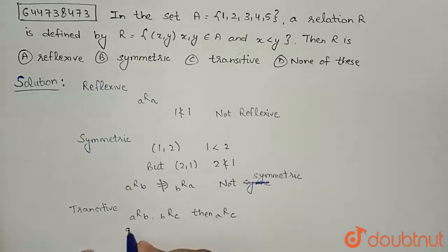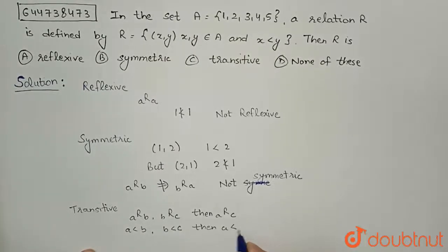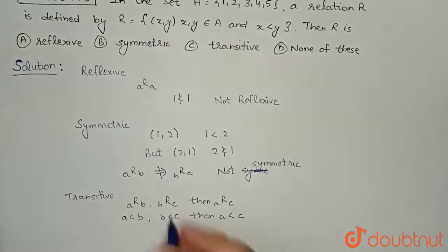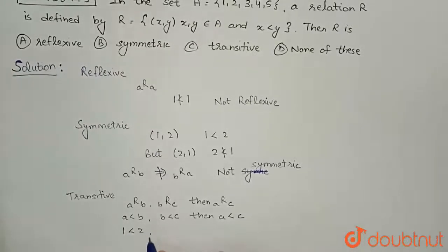a is less than b and b is less than c, then a is less than c. And we can conclude this from here. We can also take an example - suppose 1 is less than 2 and...